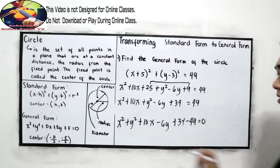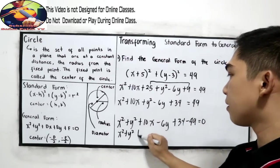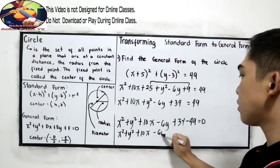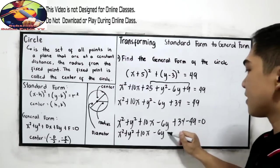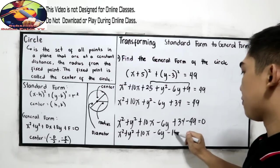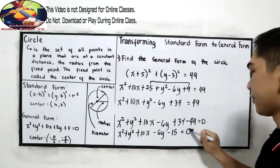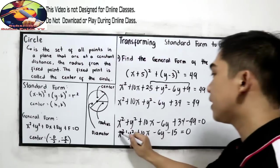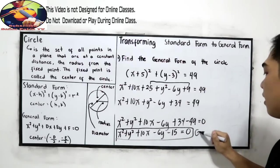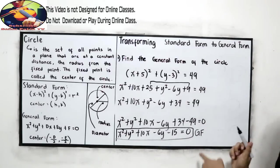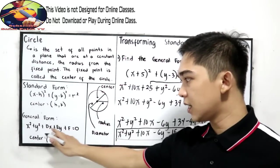Let us combine: x squared plus y squared, plus 10x, minus 6y. Then 34 minus 49 gives negative 15, is equal to 0. This is the general form of the circle. If your teacher asks you to find the value of D, E, and F: the value of D is 10, E is negative 6, and F is negative 15.